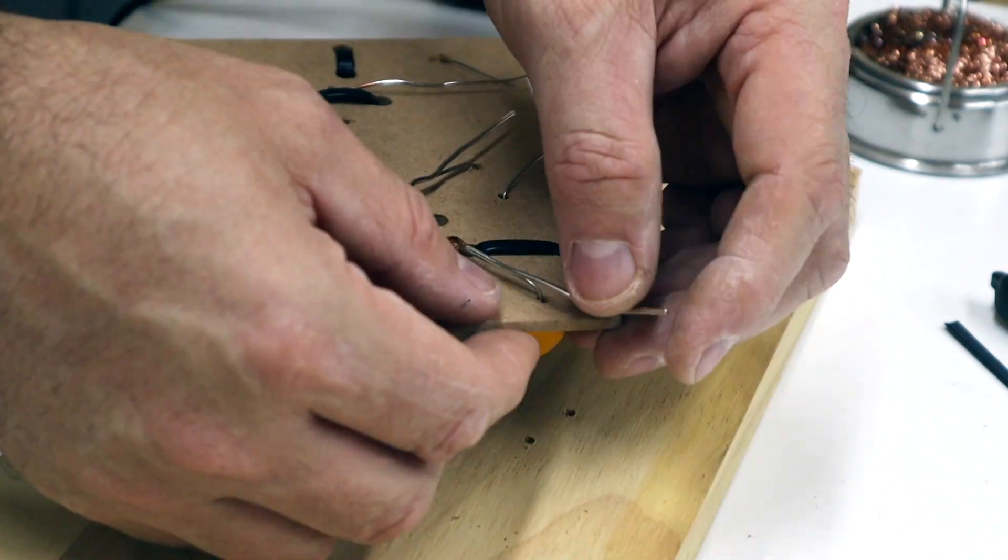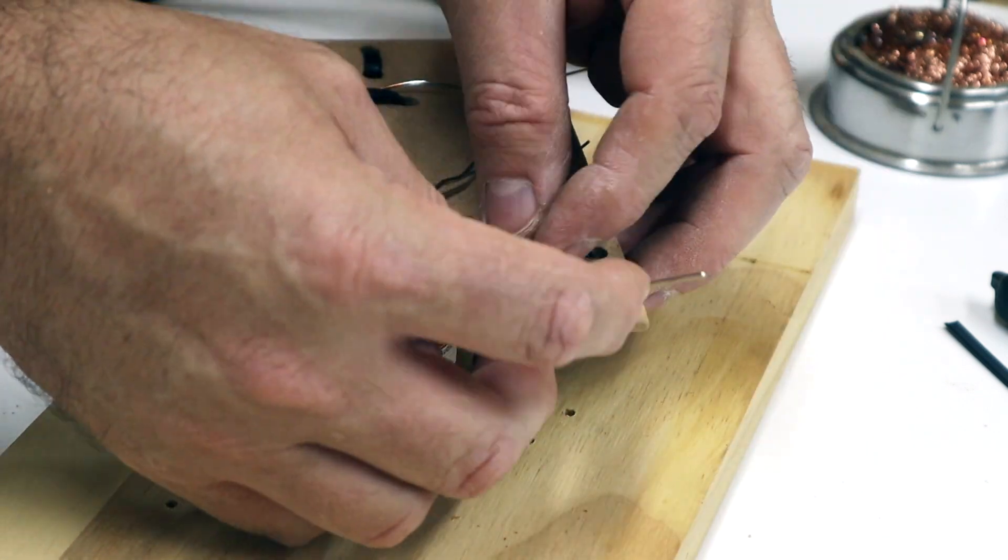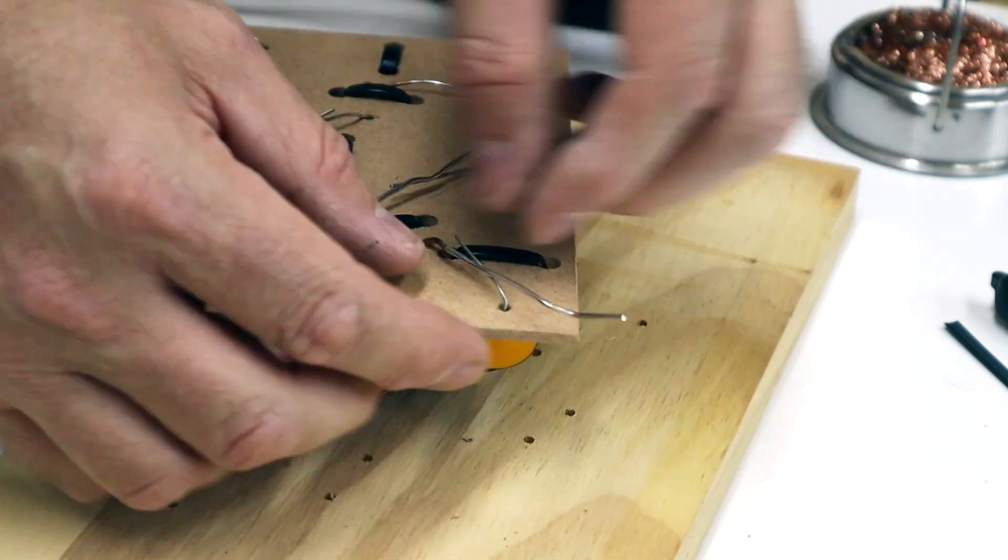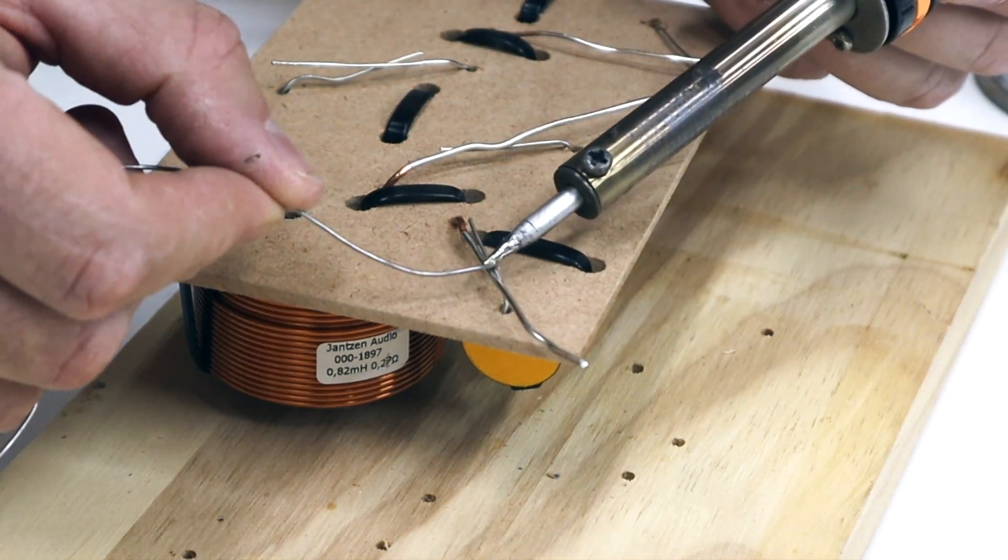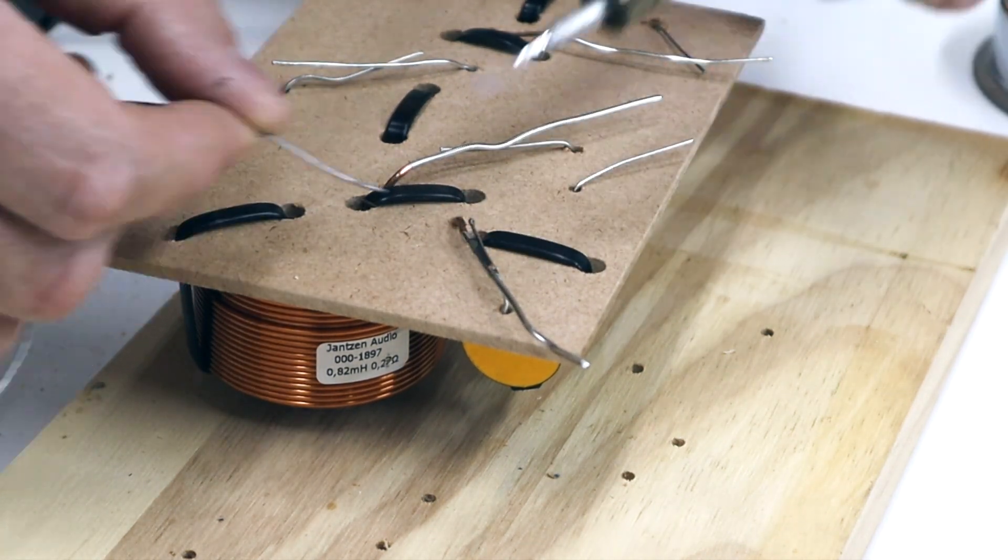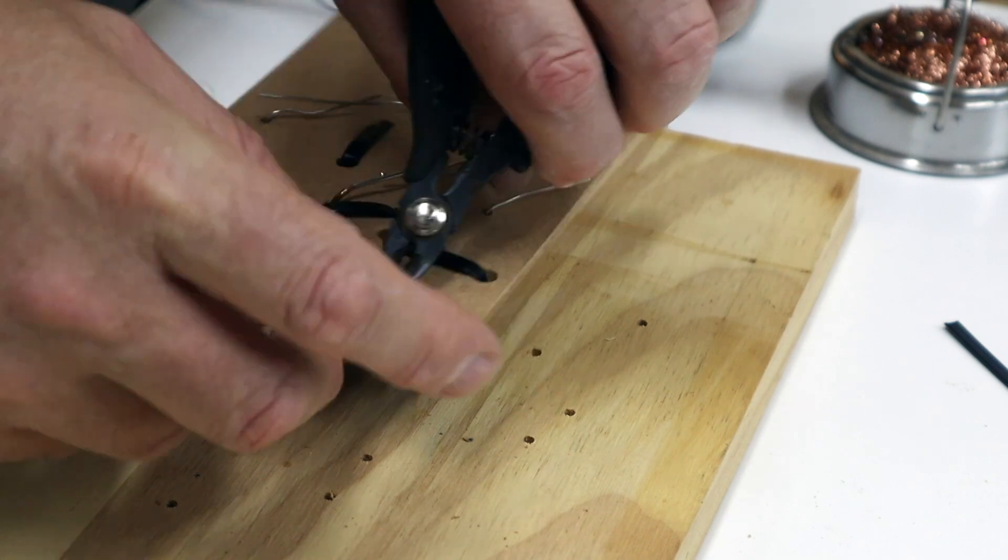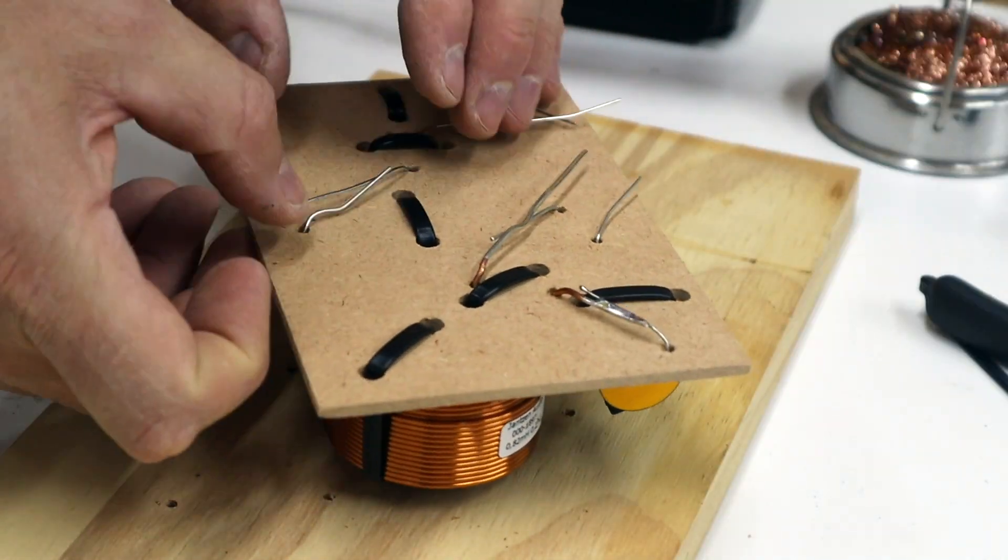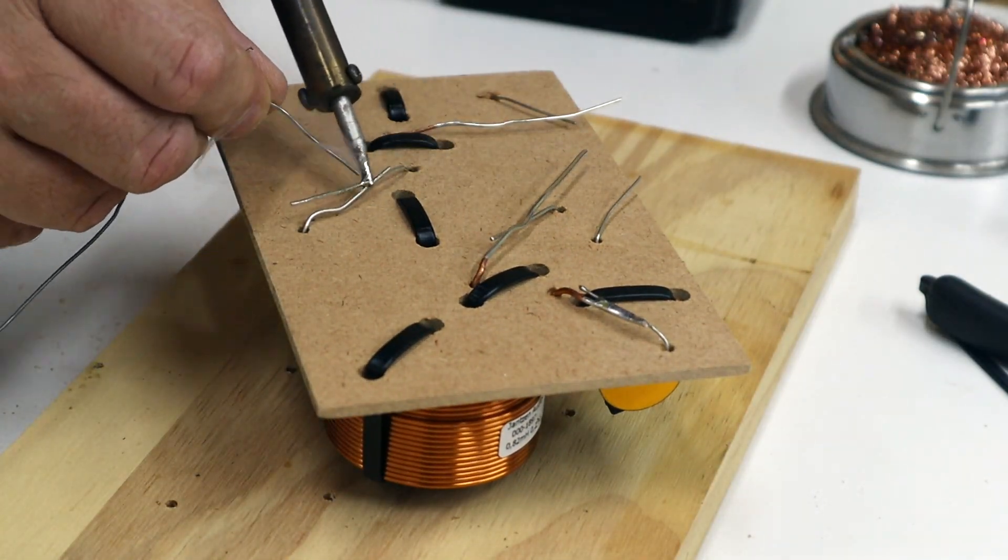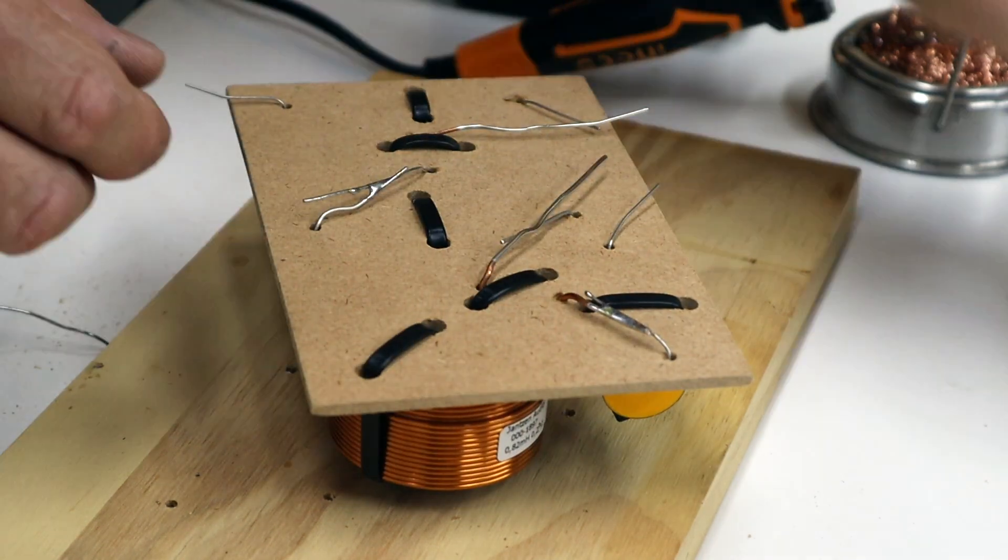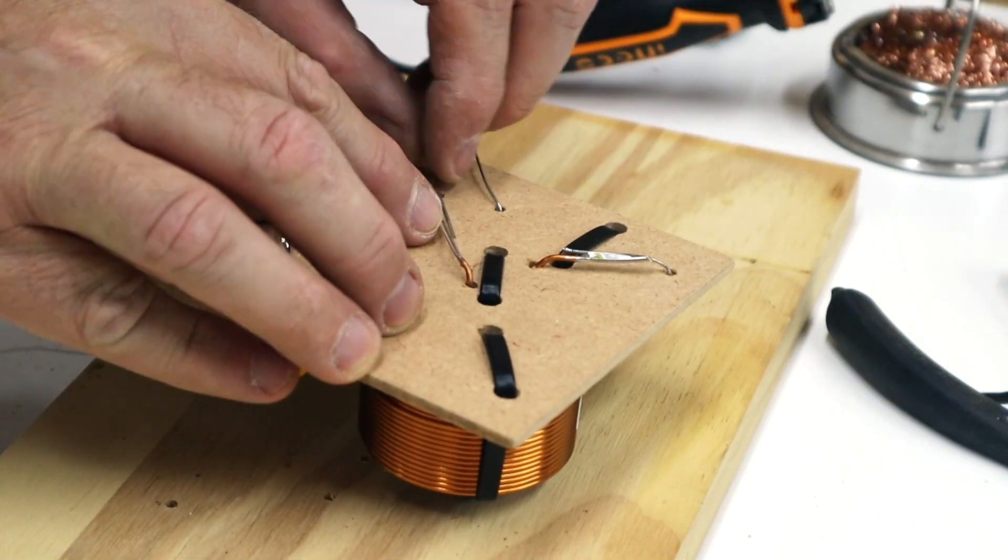Once all the component leads are passed through and secured with cable ties, you can turn the board over and start to solder the leads together. Again double check all your connections according to the circuit diagram. Trim any excess component leads with wire snaps.